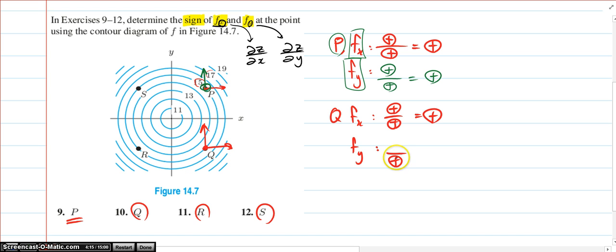But at this point, this instantaneous moment, this rate of change right now, like point Q, the z value is going down. So ∂z will be negative. So this negative will turn the whole fy into negative sign.